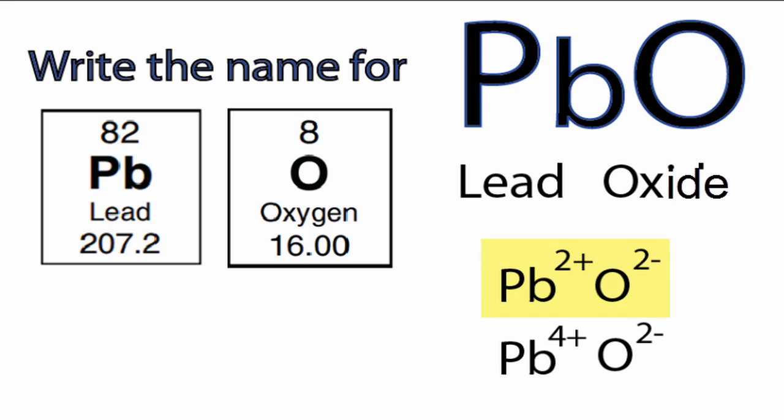For the first case, the charges balance out. +2, -2. That gives us a net charge of 0.